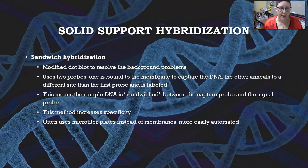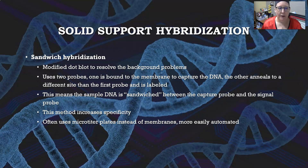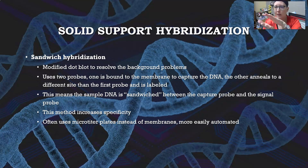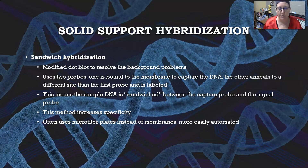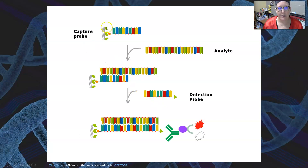Next is sandwich hybridization — a modified dot blot designed to resolve background problems. It uses two probes: one mounted on a membrane to capture the DNA, and another that anneals to a different site on the target and is labeled for detection. The sample DNA is sandwiched between the capture probe and the signal probe. This method increases specificity and often uses microtiter plates instead of membranes, making it more easily automated.